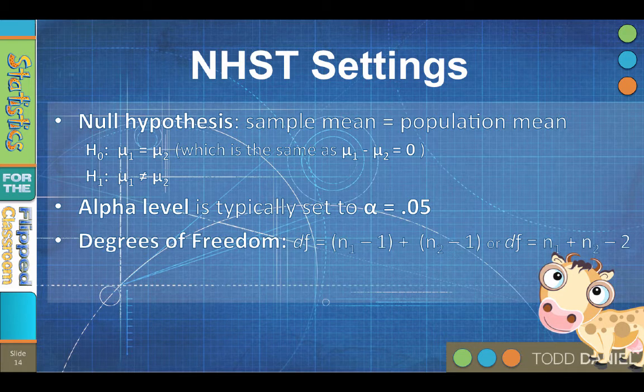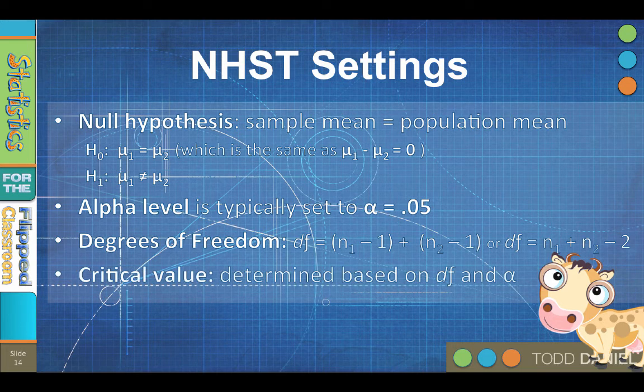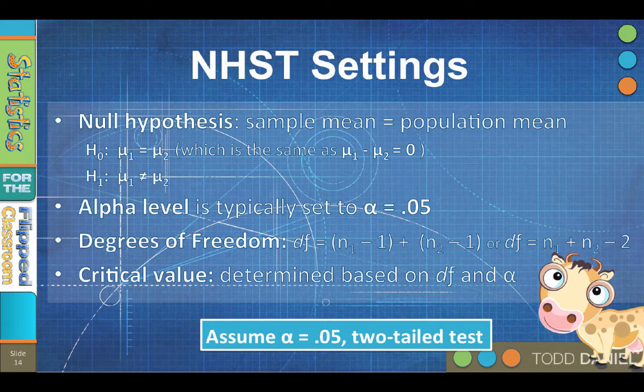The degrees of freedom for separate samples are n1 minus 1 plus n2 minus 1, which would be the same as n1 plus n2 minus 2. The critical value is determined based upon your degrees of freedom and alpha level. You will look up the critical value in students t-distribution table, which is available on the last page of your notes. So you can assume that the t-test is alpha equals 0.05 two-tailed test, unless you have been told otherwise.